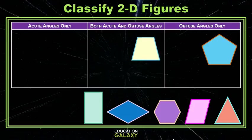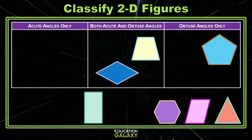The rectangle has all right angles. There's no category for that, so it will stay where it is. The parallelogram appears to have two obtuse and two acute, so that's some of each. The hexagon appears to have all obtuse.